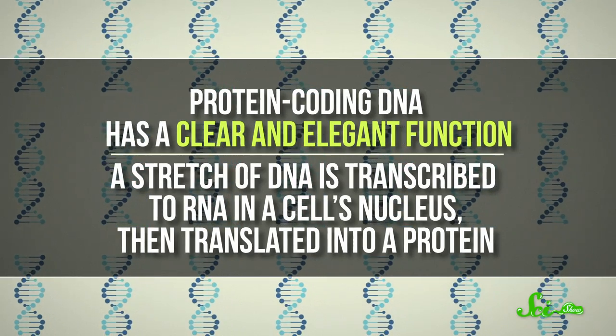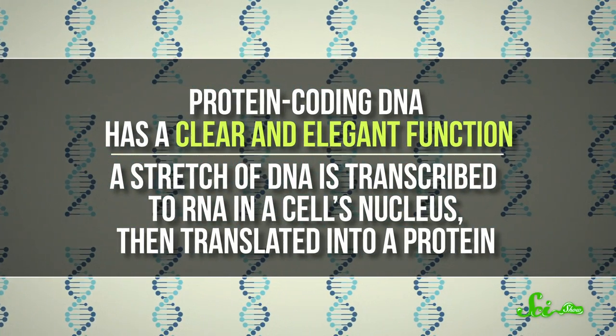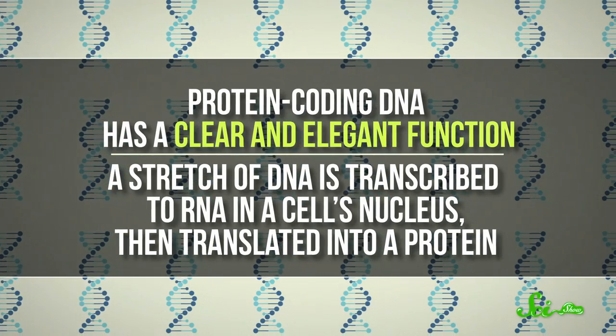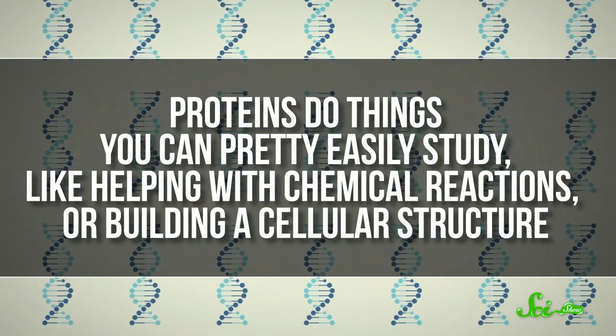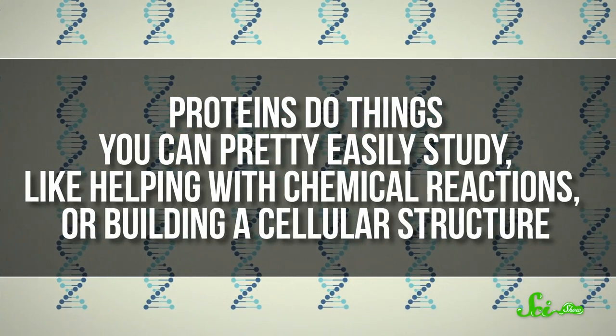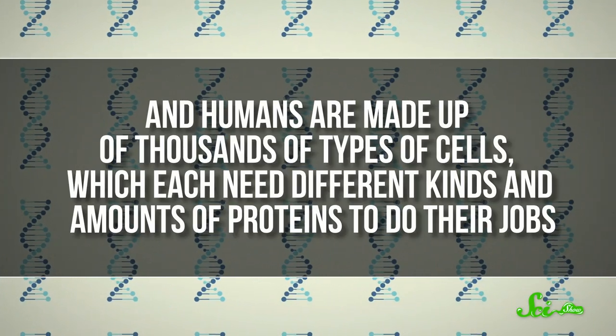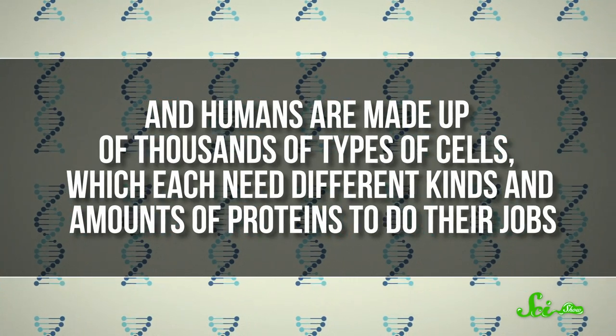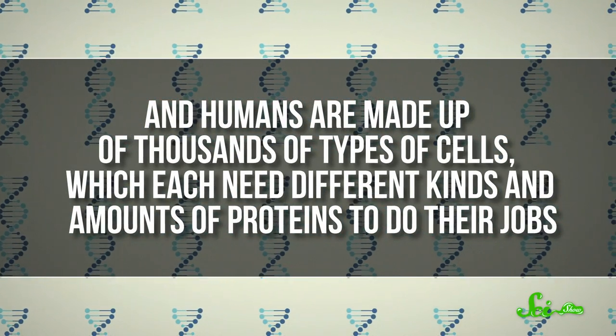Protein-coding DNA has a clear and elegant function. A stretch of DNA is transcribed to RNA in a cell's nucleus and then translated into a protein. Proteins do things that you can pretty easily study, like helping with chemical reactions or building a cellular structure. And humans are made up of thousands of types of cells, which each need different kinds and amounts of proteins to do their jobs.